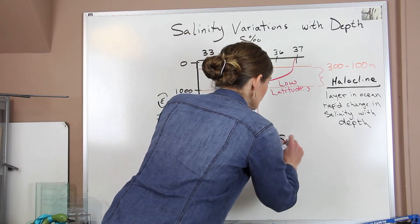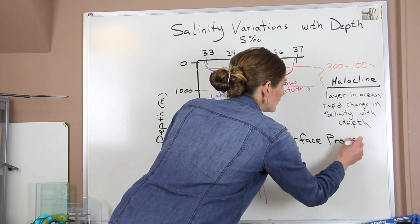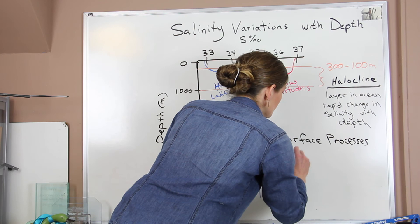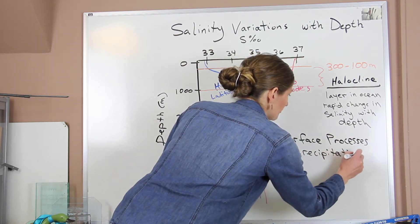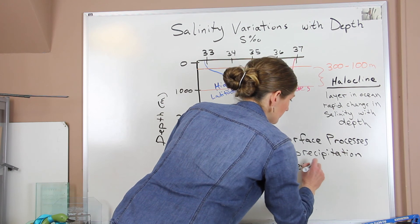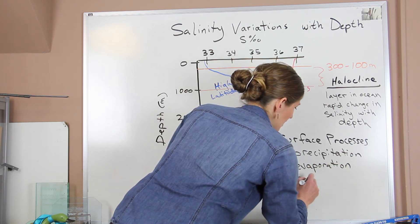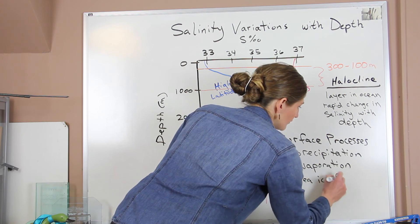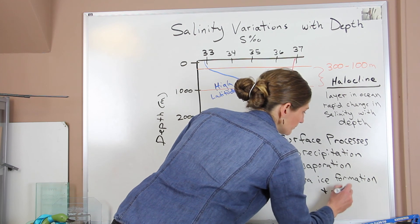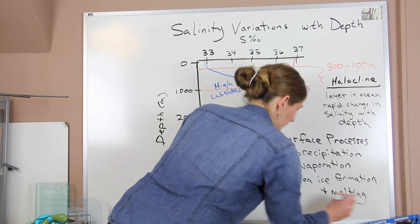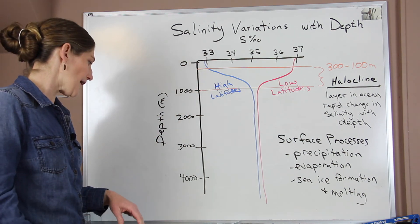So those surface processes that change salinity are precipitation, evaporation, and we have sea ice formation and melting. So those four things are what's controlling these changes that we have.